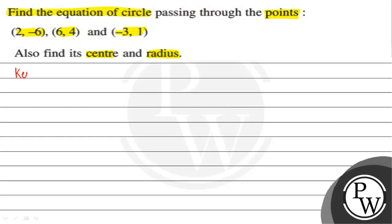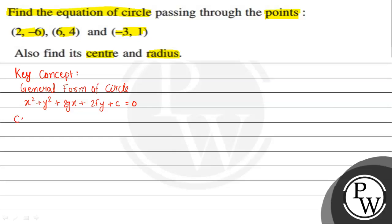The key concept to solve this question is we should know the general form of a circle, which is given by x² + y² + 2gx + 2fy + c = 0. Here the center coordinates are (-g, -f) and the radius is given by √(g² + f² - c).